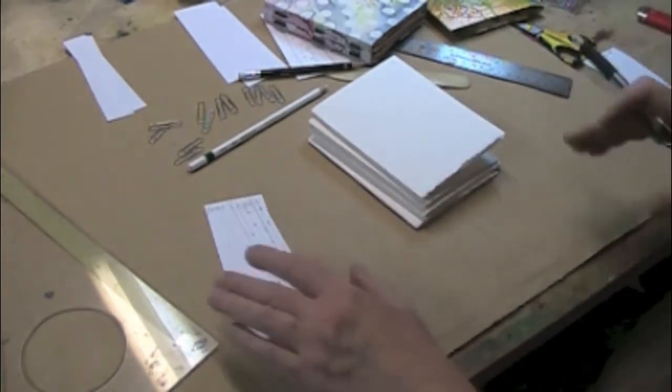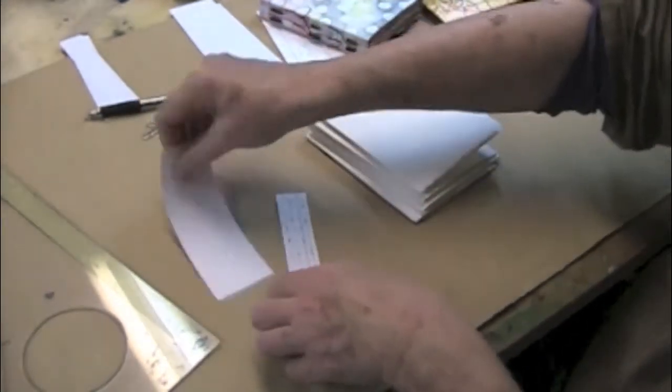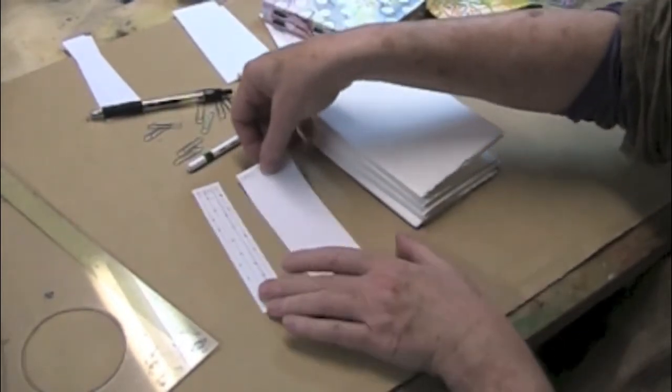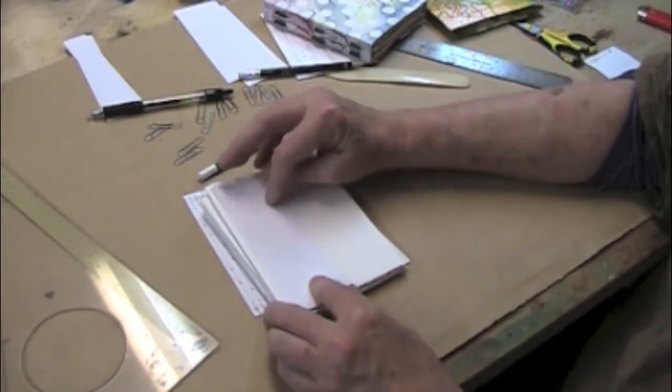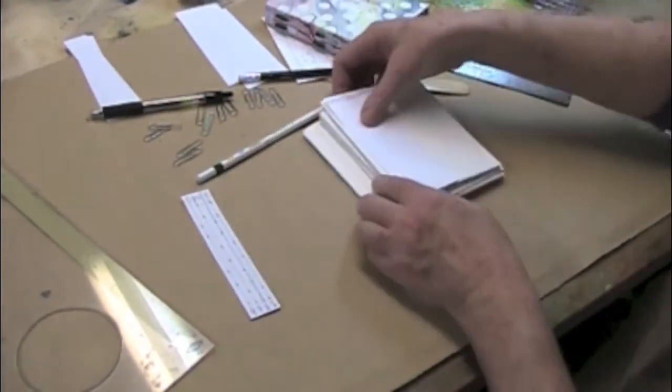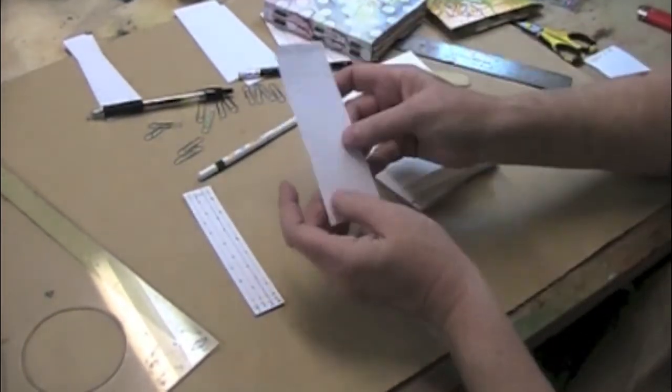Okay, so now you have your guide and you have your piercing template, which is the height of your book times about two inches. It could be one inch, it doesn't really matter.